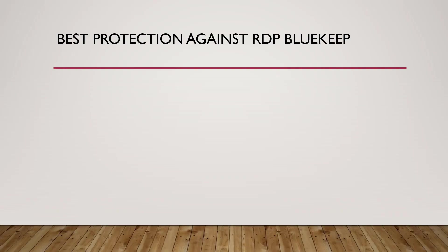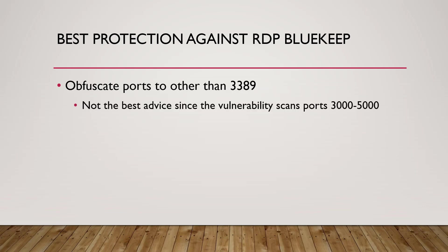Another protection is to obfuscate ports to something other than 3389. You can set your server to listen on other ports for remote desktop protocol. However, this isn't necessarily the best advice because BlueKeep will scan all ports from 3000 to 5000. Using a port outside that range is an option, though you may have issues getting it to work, and it is viable since BlueKeep currently only scans ports 3000 to 5000.